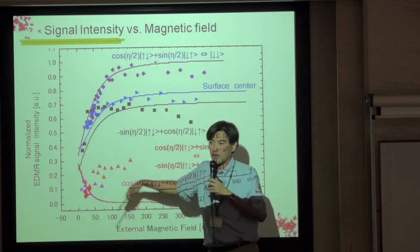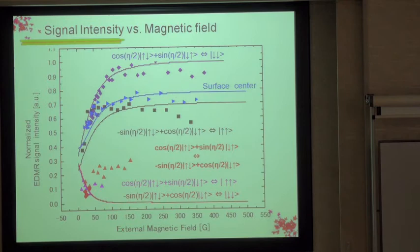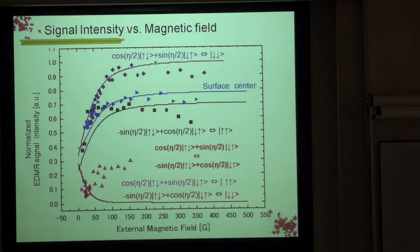We are basically changing α|up,down⟩ + β|down,up⟩ coefficients simply by the magnetic field. We have theory explaining why this is happening, but it is a little involved so I will skip the details.